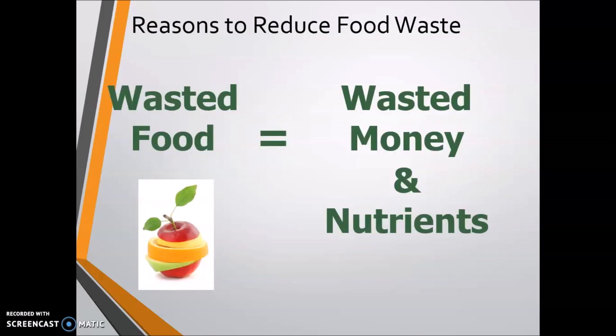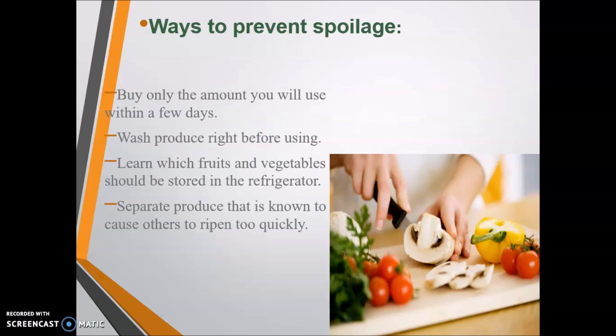Reasons to reduce food waste: wasted food equals wasted money and nutrition. Wasting nutrients is a very significant problem because every hour 4–5 lakh children face problems of food or malnutrition in India and around the world due to a lack of nutrients. Ways to prevent spoilage: buy only the amount you use within a few days. These are the habits and techniques you need to adopt to prevent food spoilage.